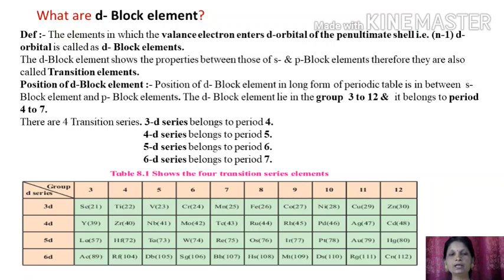The 4d series includes 10 elements: yttrium, zirconium, niobium, molybdenum, technetium, ruthenium, rhodium, palladium, silver, and cadmium.